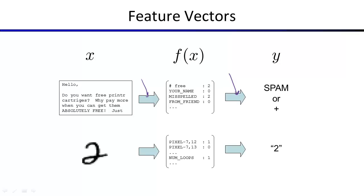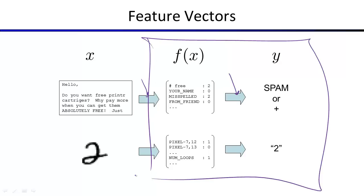The same pipeline works for OCR: x is a PNG file, you extract pixel thresholds, number of loops, connected components, etc., and classify into one of ten digit classes. For spam it's binary classification with two classes. Today we'll concentrate on the classifier component — what functions map from a real-valued feature vector to a prediction.